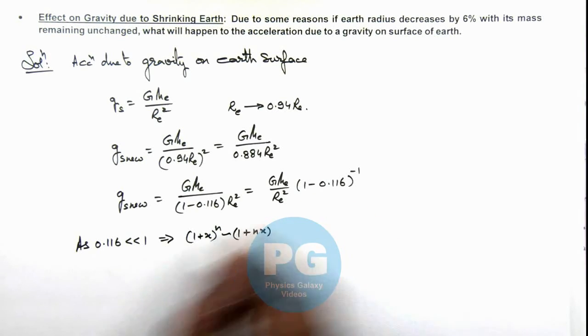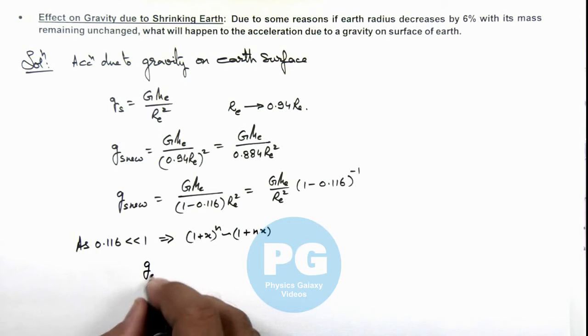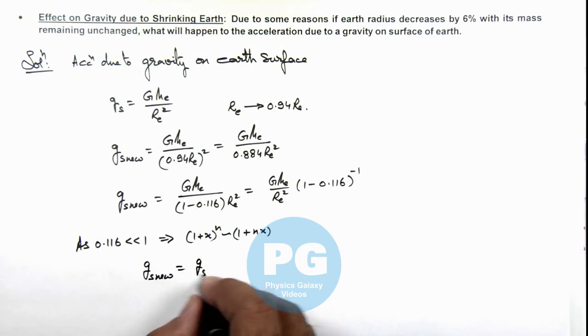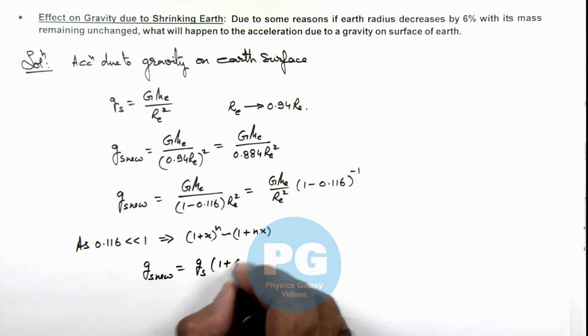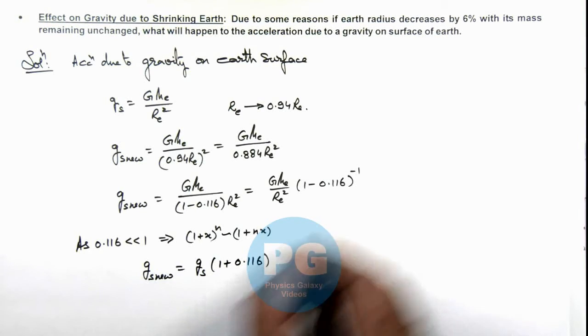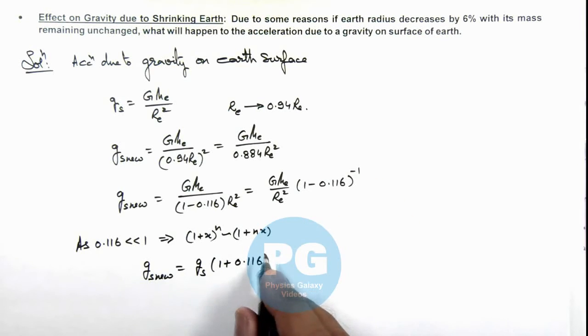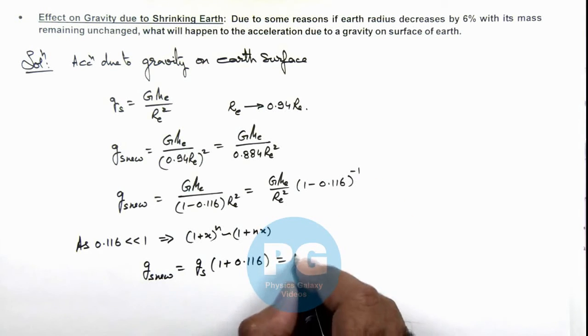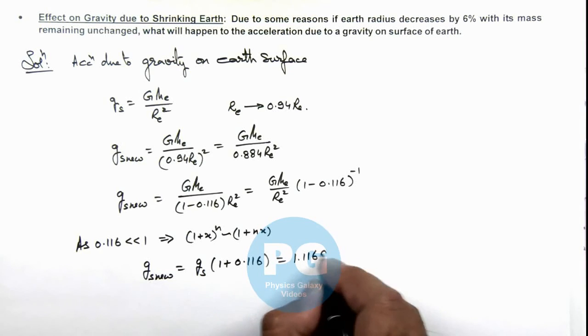Using this binomial approximation, the value of g_s new we are getting is g_s multiplied by (1 + 0.116), which equals 1.116g_s.